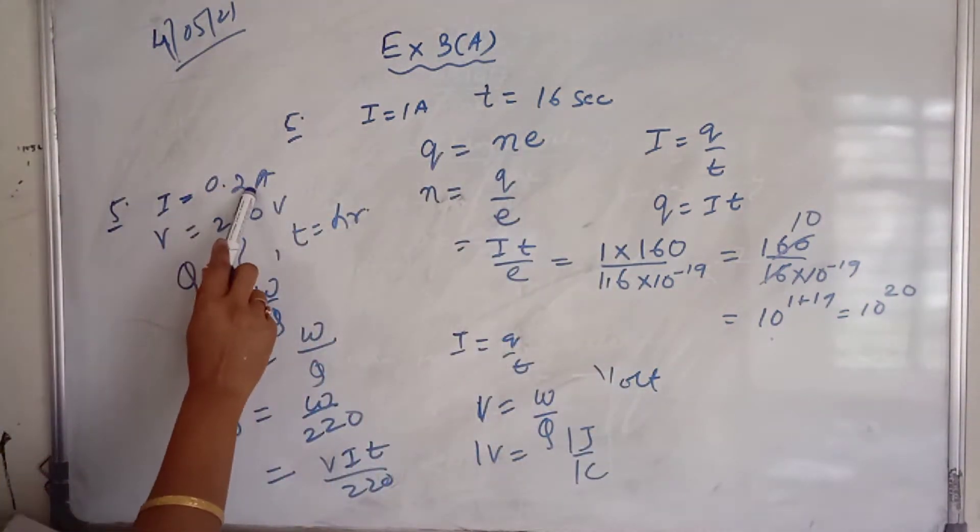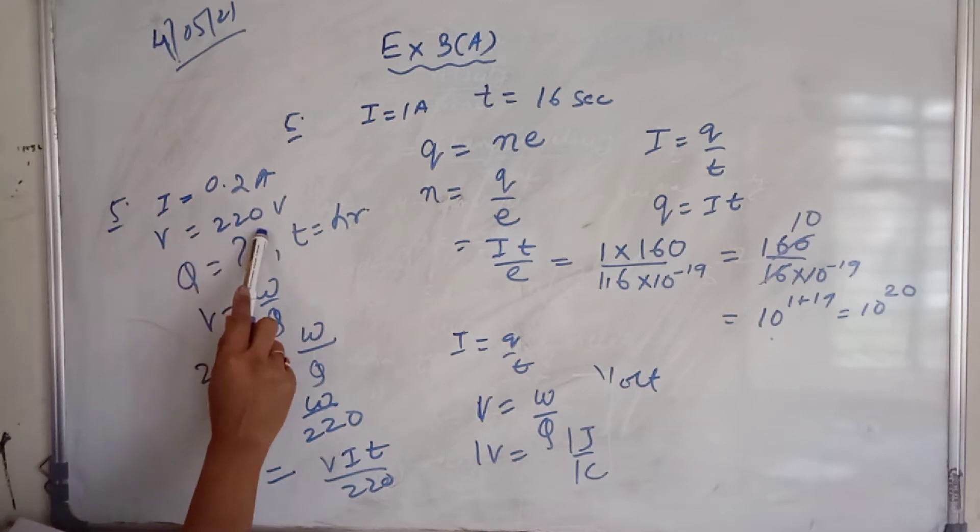Here I is given 0.2 ampere, V equals 220 volt. You have to find the charge and time is given as one hour.